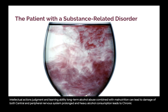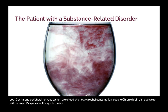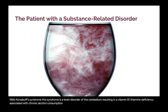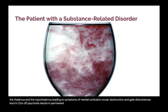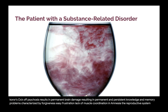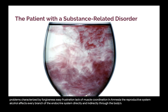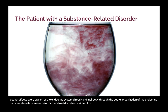Long-term alcohol abuse combined with malnutrition can lead to damage of both the central and peripheral nervous systems. Prolonged and heavy alcohol consumption leads to chronic brain damage — Wernicke-Korsakoff syndrome, a brain disorder of the cerebellum resulting from a vitamin B1 (thiamine) deficiency. Two syndromes are involved: Wernicke's encephalopathy causes brain damage in lower parts of the brain — the thalamus and hypothalamus — leading to mental confusion, ocular dysfunction, and gait disturbances. Korsakoff psychosis results in permanent brain damage with persistent memory problems, forgetfulness, easy frustration, lack of muscle coordination, and amnesia. The reproductive system is also affected: females face increased risk for menstrual disturbances, infertility, miscarriage, stillbirth, and premature delivery.